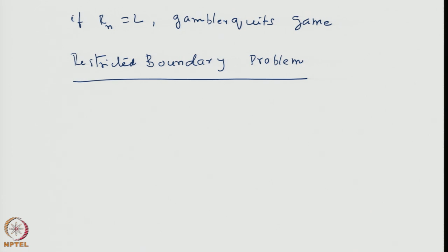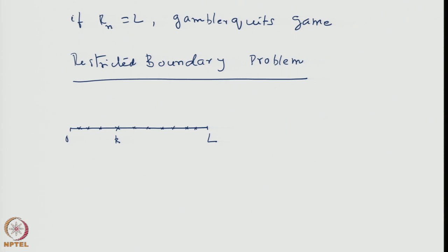We generalize the analysis now: 0 dollars at one end, L dollars at the maximum. He starts with K dollars, each successive game he gains or loses 1 dollar, and there are L such sites. If the walker starts from K, we want to know the probability of him ultimately hitting 0 without hitting L.